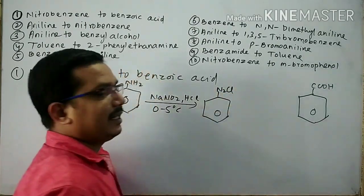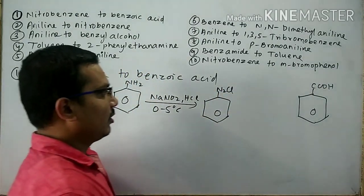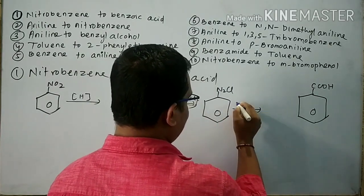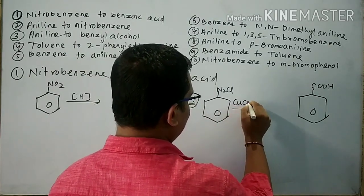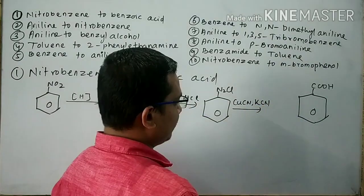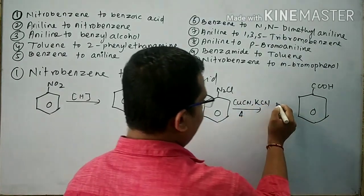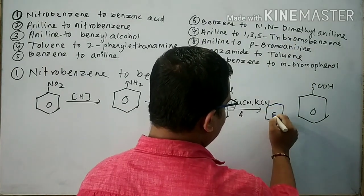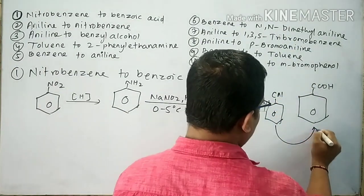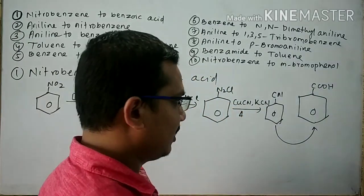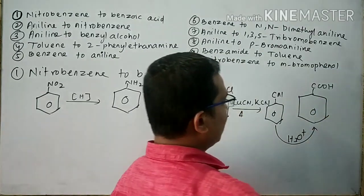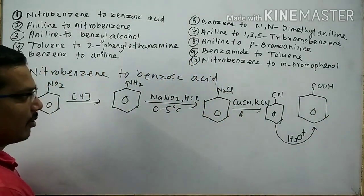Now BDC is converted into cyanobenzene. When BDC undergoes reaction with CuCN dissolved in HCl and heat is given, then cyanobenzene is formed. When cyanobenzene undergoes acid hydrolysis, then benzoic acid is formed.